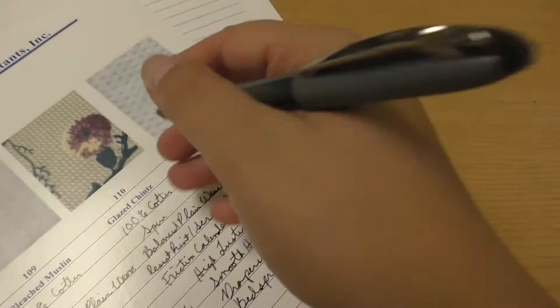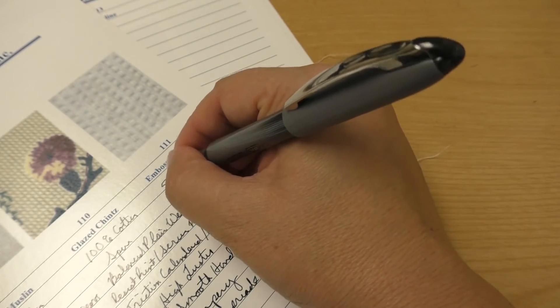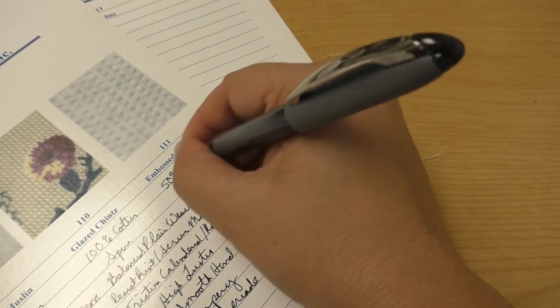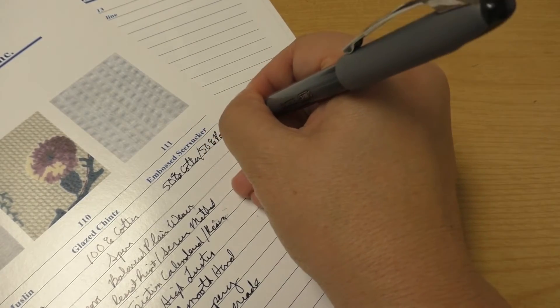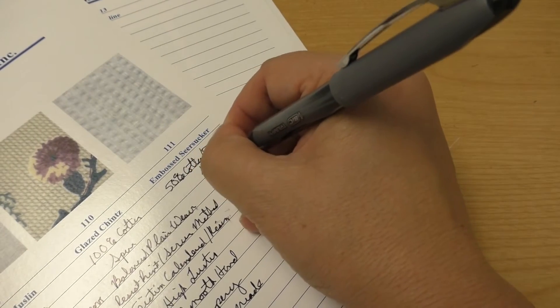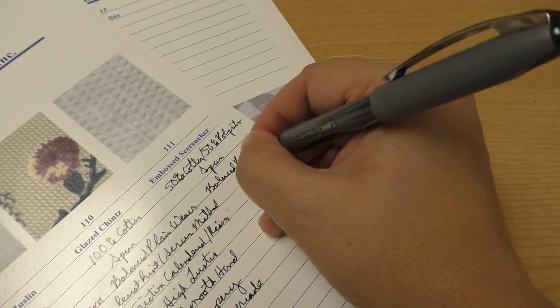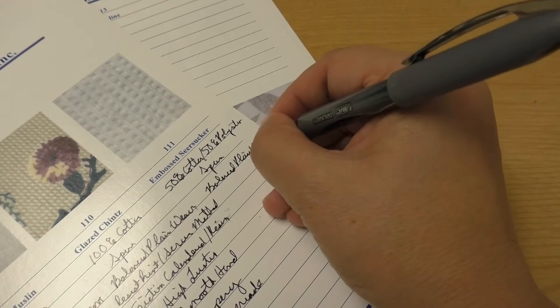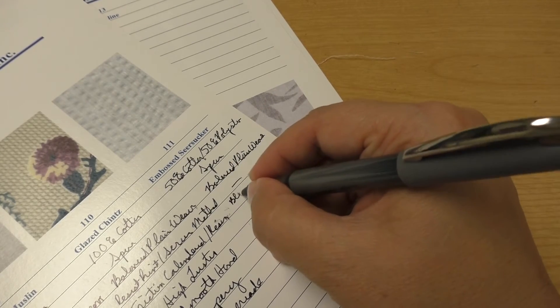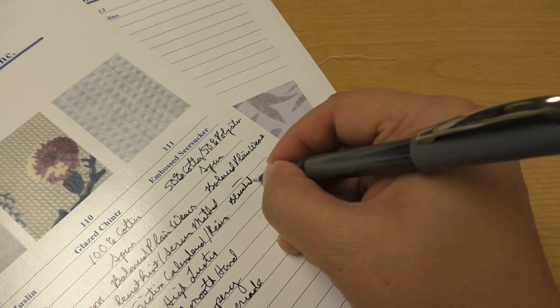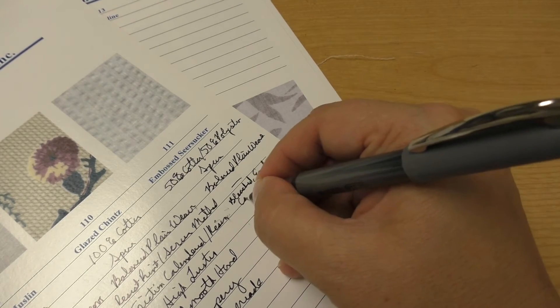Swatch number 111 is the embossed seersucker, so 50% cotton. This is not even plissé, right? This is not seersucker, it's just a really poor imitation of seersucker. The embossing could even wash out. Balanced plain weave, no dye print, but it was bleached and embossed calendared.